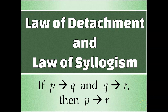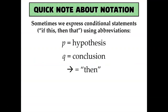Let's talk about the law of detachment and the law of syllogism, but first we need to have a quick discussion about notation. Sometimes in geometry we use abbreviations for things, such as how to abbreviate the hypothesis and the conclusion of a conditional statement. For reasons I don't understand, we call the hypothesis P and the conclusion Q. I don't know why we chose P and Q — H and C might have made more sense — but P and Q is what we call them.